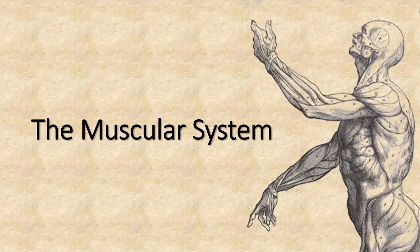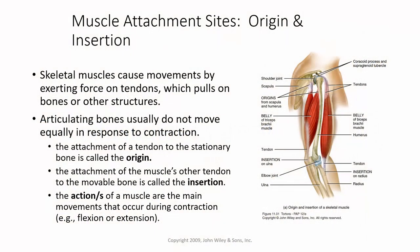In this lecture we're going to look at the muscular system. Skeletal muscles cause movement by exerting force on tendons, which pull on bones or other structures. Articulating bones usually don't move equally in response to the contraction. The attachment of a tendon to the stationary bone is called the origin; the attachment to the movable bone is called the insertion.